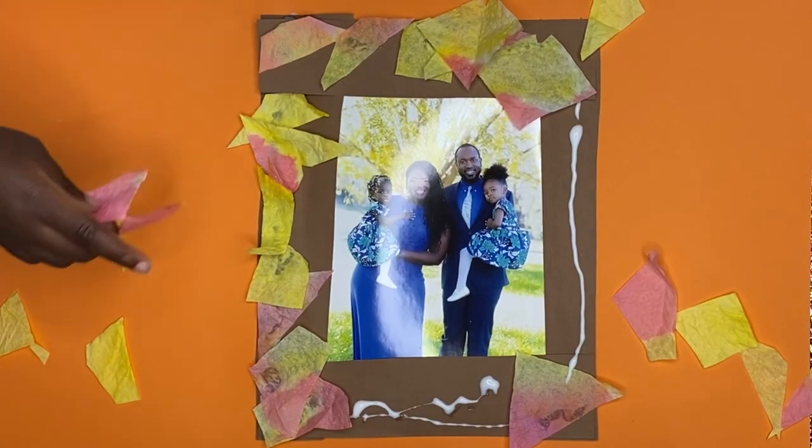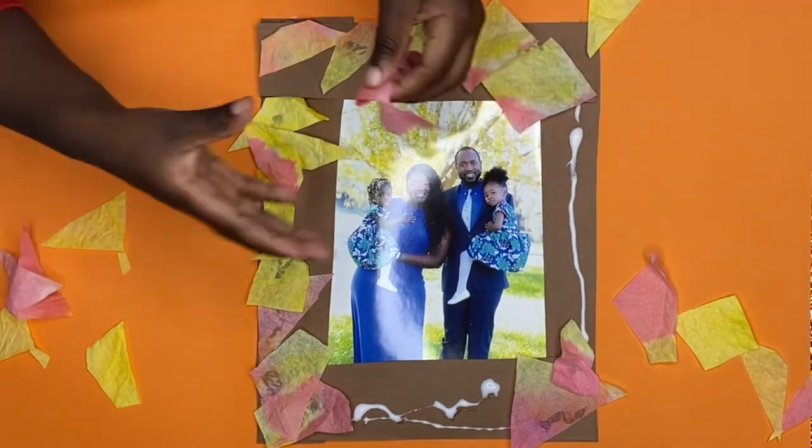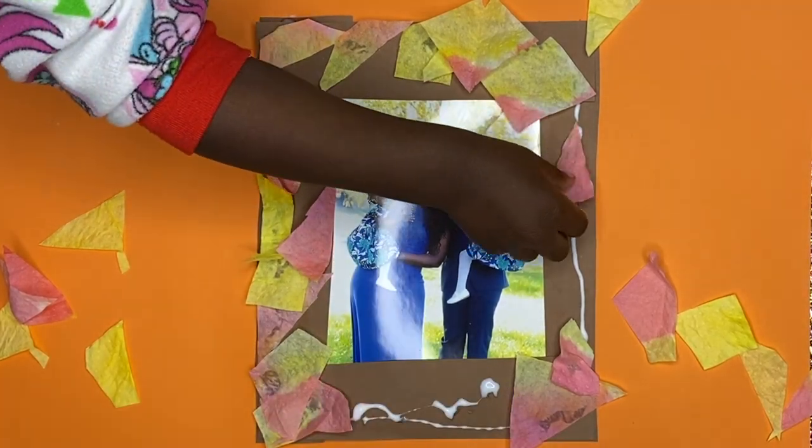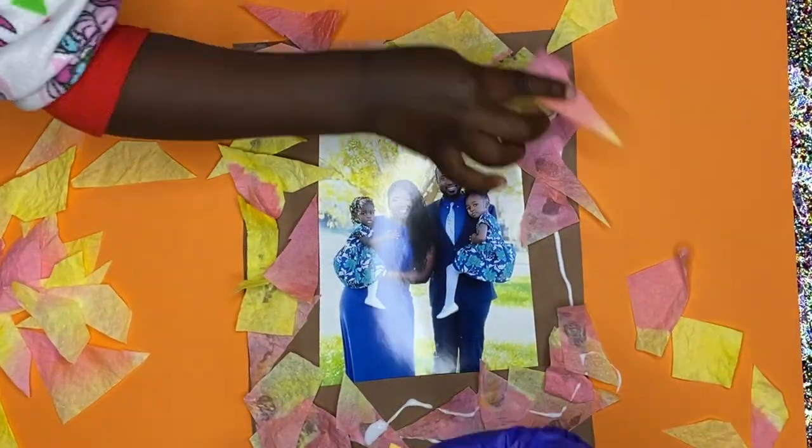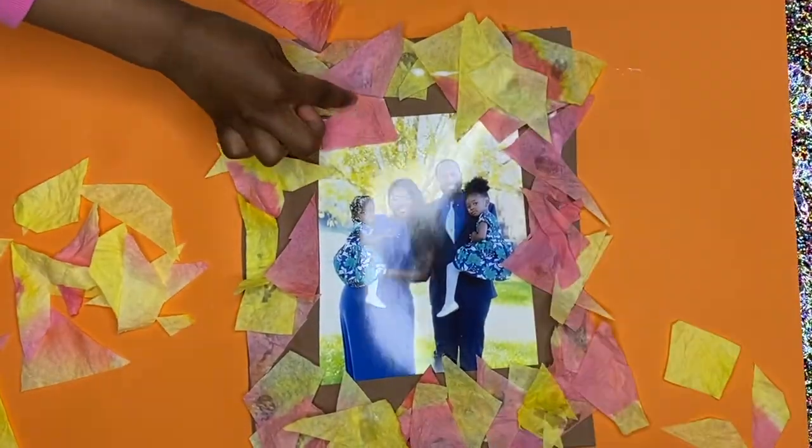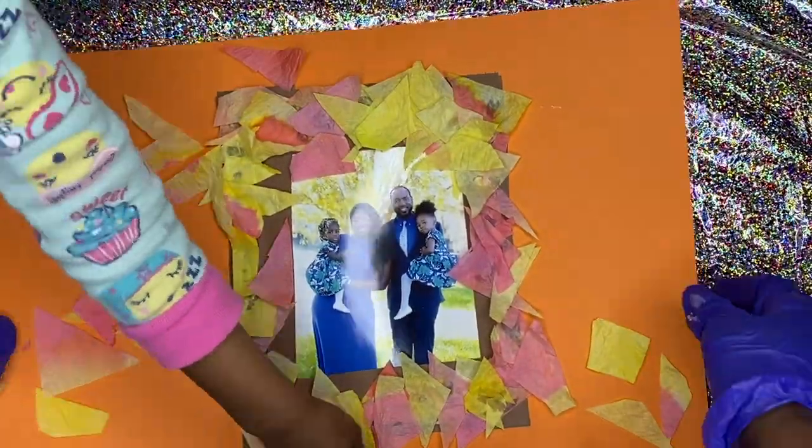And my two-year-old just hopped on over to the table once she saw me cutting out these shapes and she wanted to glue them. So I'm going to let her decide how she wants to have our frame decorated. So I just told her make sure you get all the glue and she followed directions. So this is a good one for kids two and up. She's handling it very well and she made the cutest design.